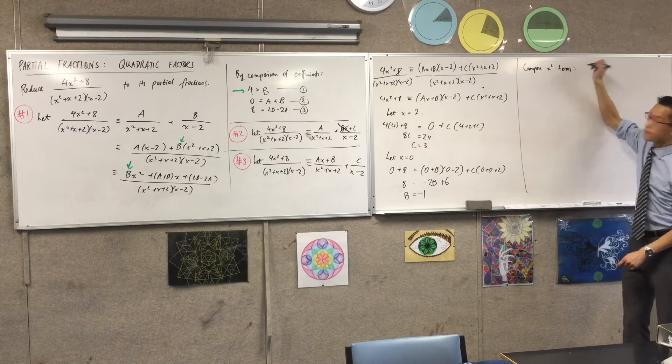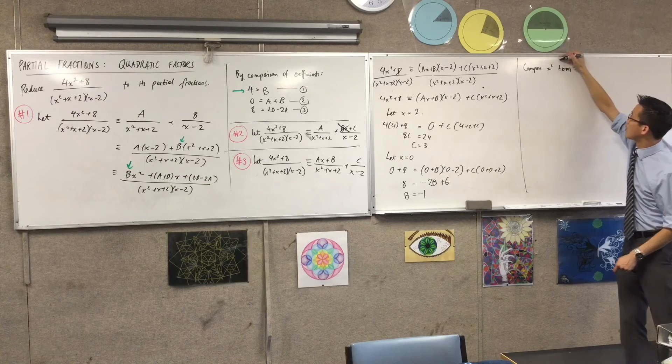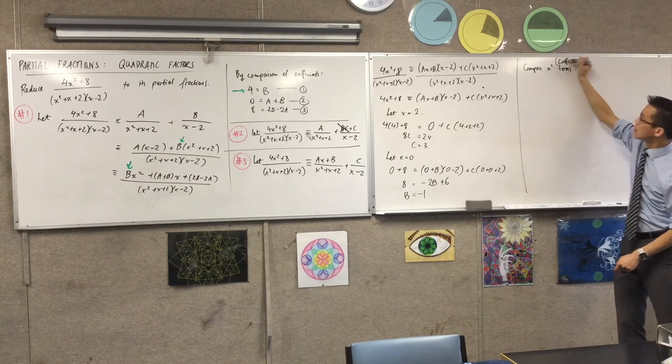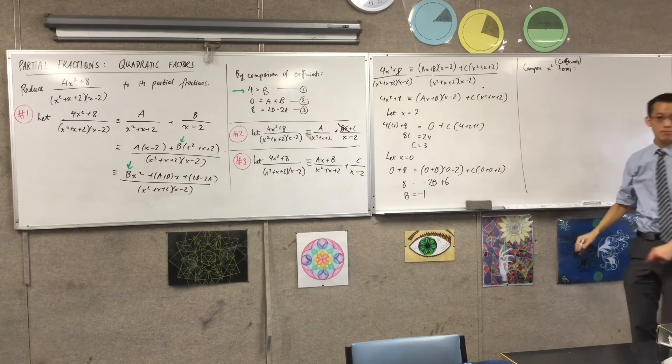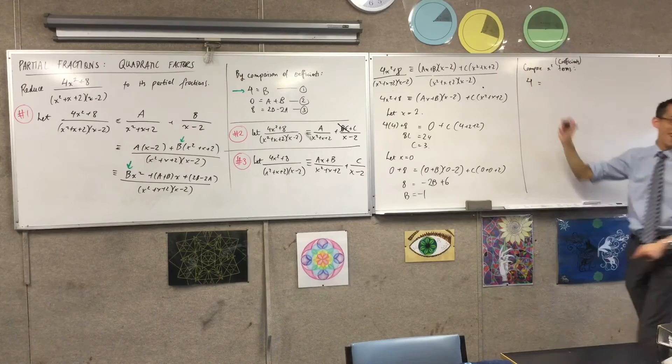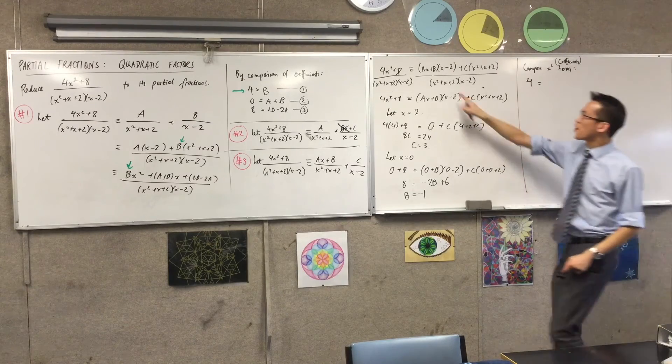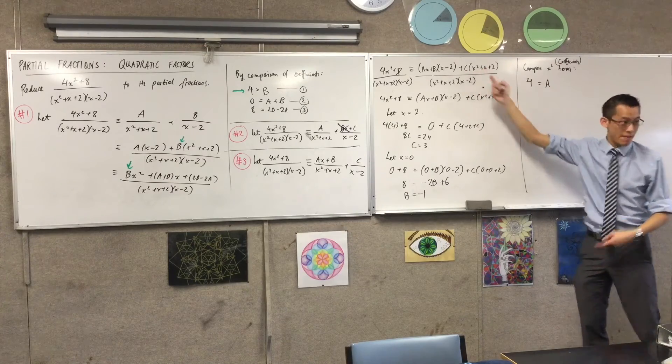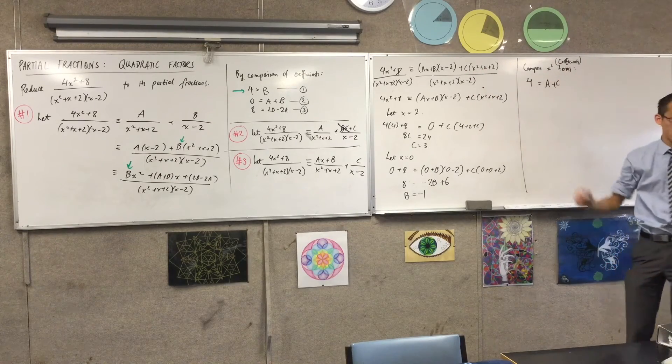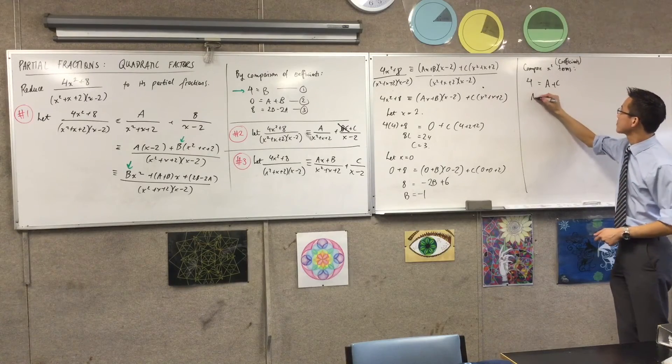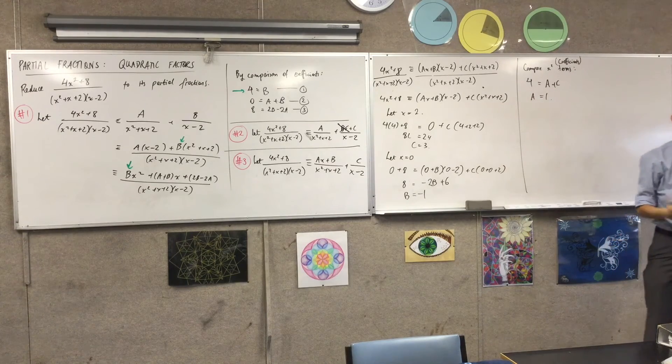Or rather, x squared coefficients, I should say. What's the coefficient of x squared on the left? On the left, it's 4. On the right-hand side, you've got ax times x, so that'll give you an x squared term. And then you've got c times x squared, that'll give you a c, which we already know. So, c is equal to 3. So, a is equal to what? Are you happy with that?